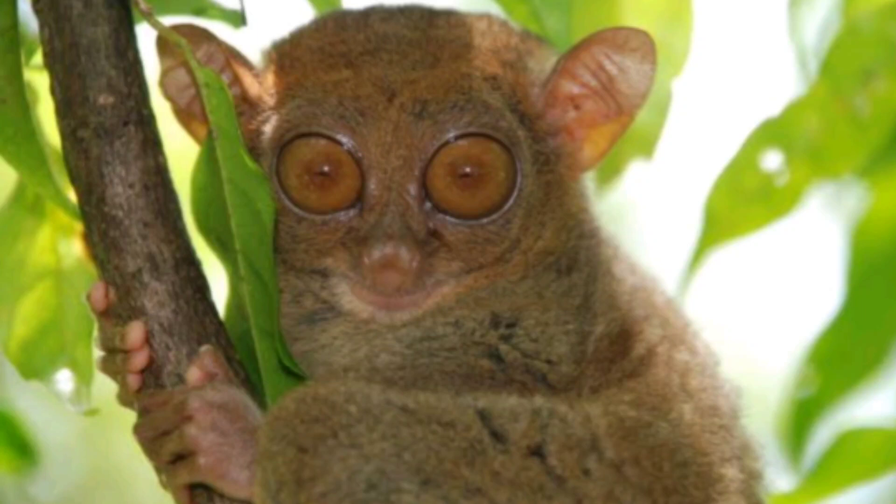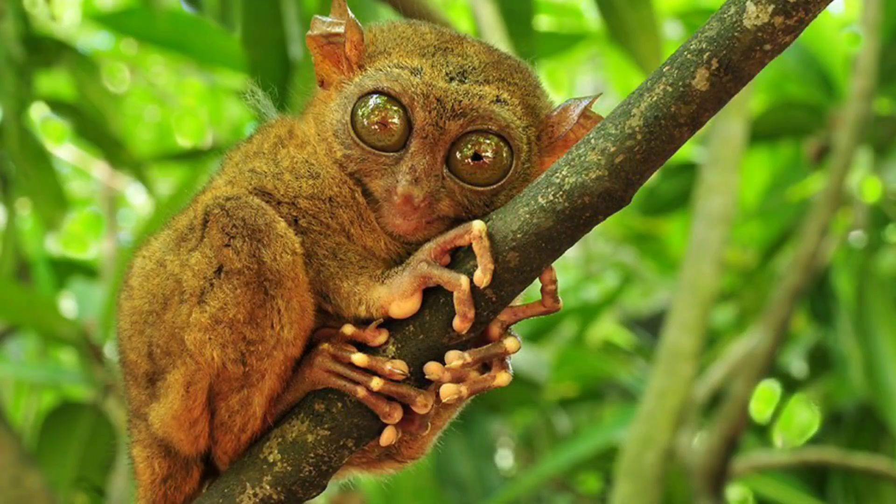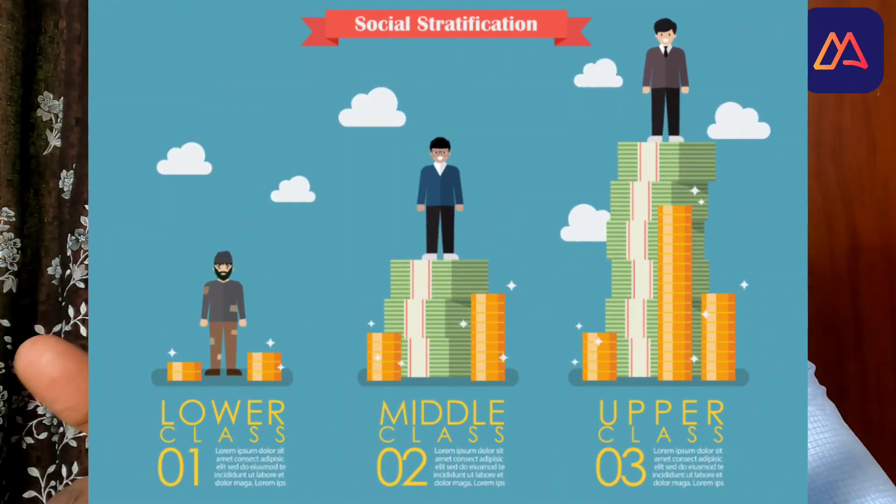Going further back in the taxonomy, you can discuss prosimians. Prosimians are largely nocturnal and tend to be more solitary — they come together mainly to mate and otherwise roam independently. You can contrast this with the more complex social organizations seen in higher primates.